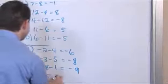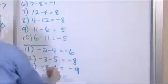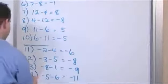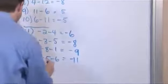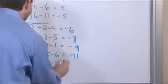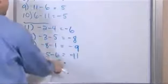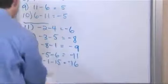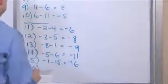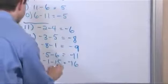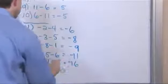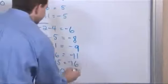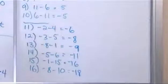What if we had negative 5 minus 6? Well, it's the same thing — we're going to have 11, but we're going to have to stick a negative out front because we're going that direction. Negative 1 minus 15 is the same thing: add these guys together and stick a negative out front, so negative 16. And negative 8 minus 10 — we're starting negative and taking more away, so it's going to be 18 with a negative sign out front.